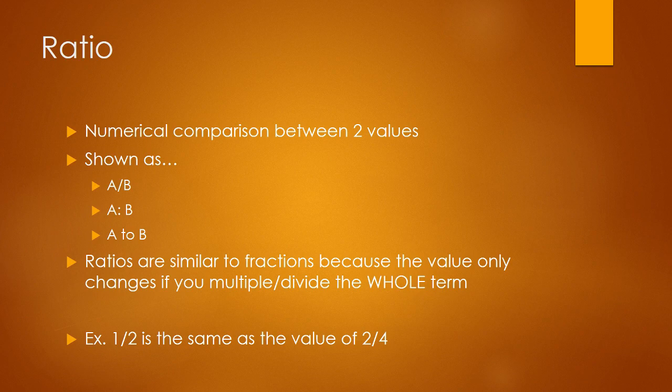So A divided by B, A colon B, or A to B. The ratios are similar to fractions because the whole term can change if you multiply or divide the whole unit. So you can only multiply and divide A and B as a whole. So an example is that one-half is the same value as two-fourths.